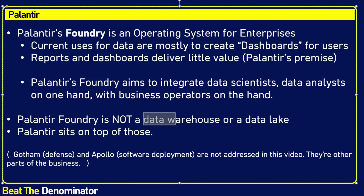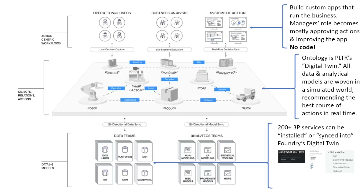Let me pull up a chart and discuss each of the functions of Foundry. This is what the operating system looks like. The first step to using Foundry to run your enterprise is you need to, in Palantir's language, hydrate the model — you need to load separate data sets onto Foundry. You need to load all of your data: geospatial data, Internet of Things data like sensors on an oil rig or a parking lot, data from ERP systems, platforms, and data lakes.